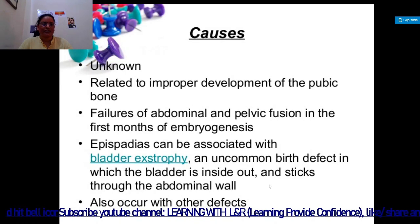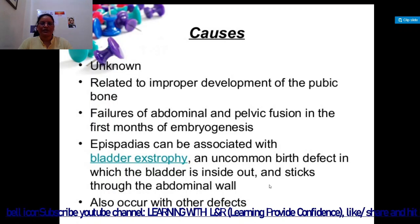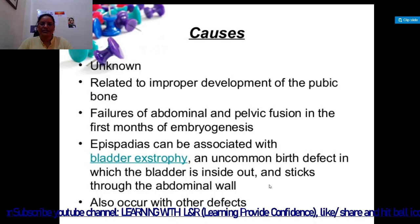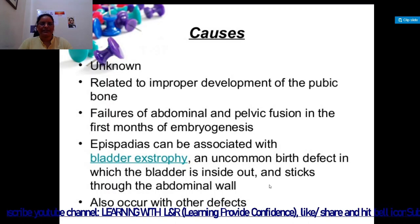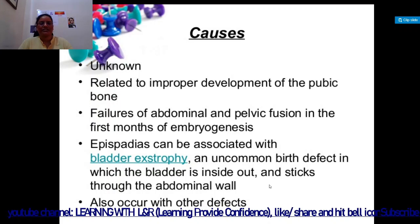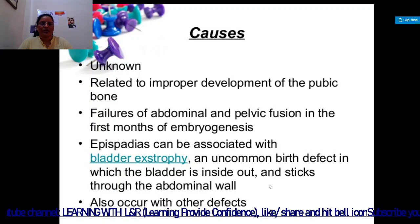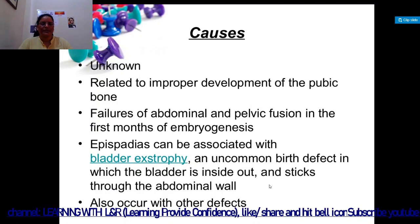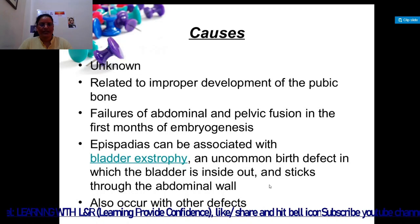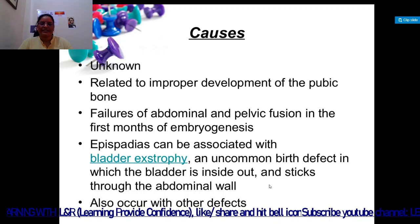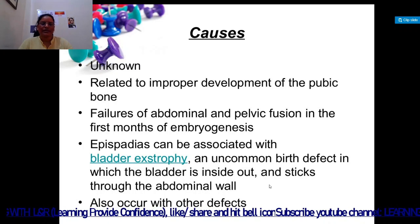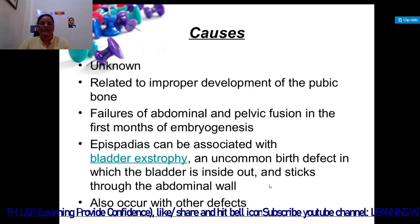The cause is unknown but is related to improper development of the pubic bone. It occurs during embryologic development — if the pubic bone does not properly develop, this condition occurs. There are failures of abdominal and pelvic fusion in the first months of embryogenesis. Epispedias is also associated with bladder extrophy, an uncommon birth defect in which the bladder is inside out and sticks through the abdominal wall.